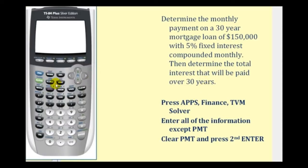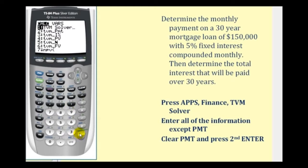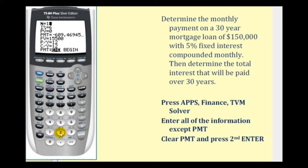So we're going to press the apps key, and then press enter to access the finance menu. And then we're going to press enter again to access the PMT solver. Capital N represents the total number of payments that will be made. We're making monthly payments over 30 years, so N would be 12 times 30, or 360.